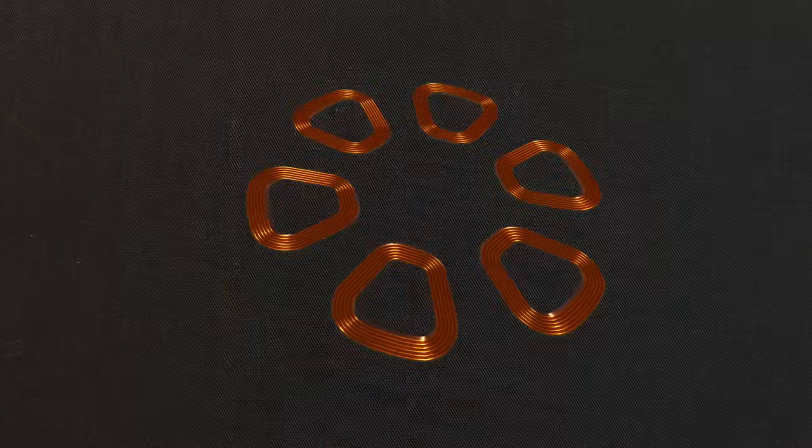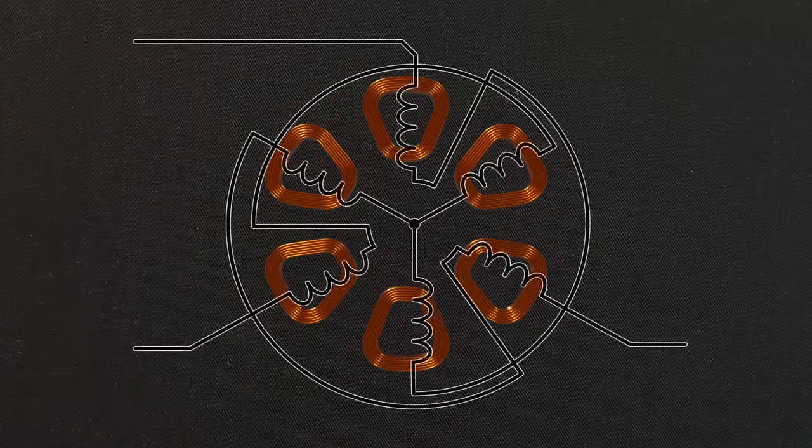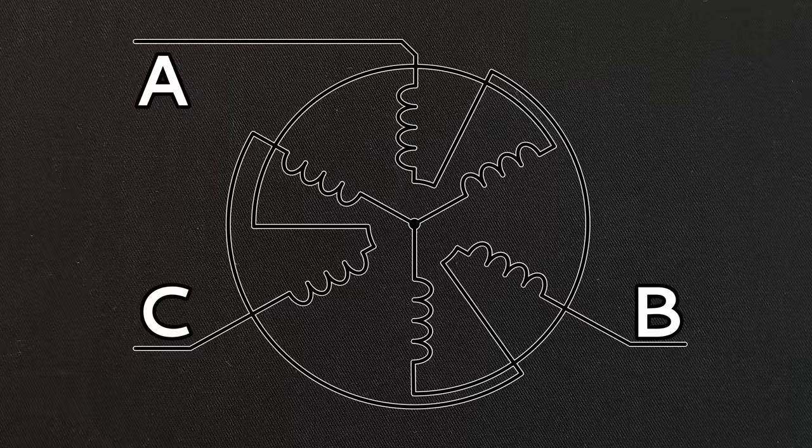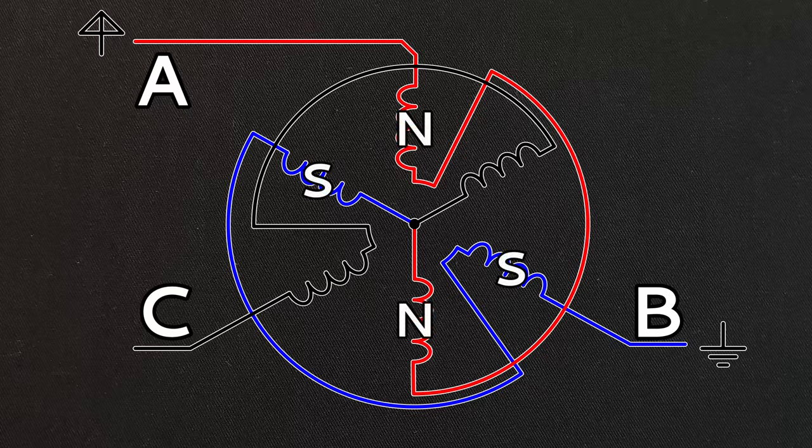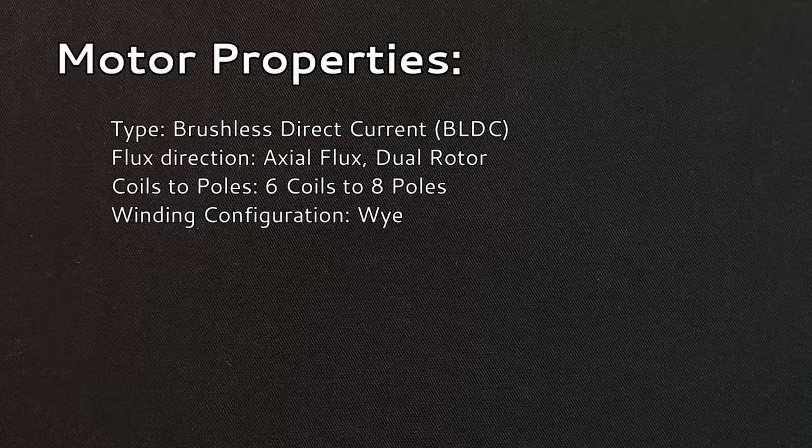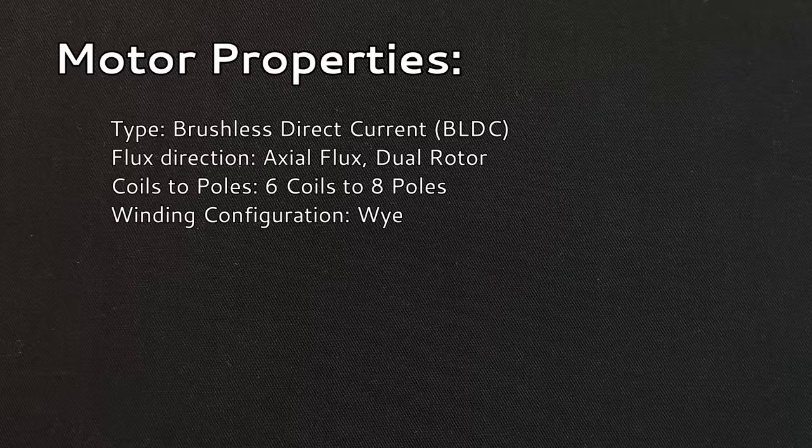This has the effect of creating what's called a Y configuration. This way of connecting up the phases means that by choosing which phase to connect to power and which one to ground, we can control which electromagnets produce a north or south pole. The alternative to this wiring is the delta configuration, but since most low power BLDC motors use the Y configuration and it's decidedly easier to make, I just went with the Y configuration.